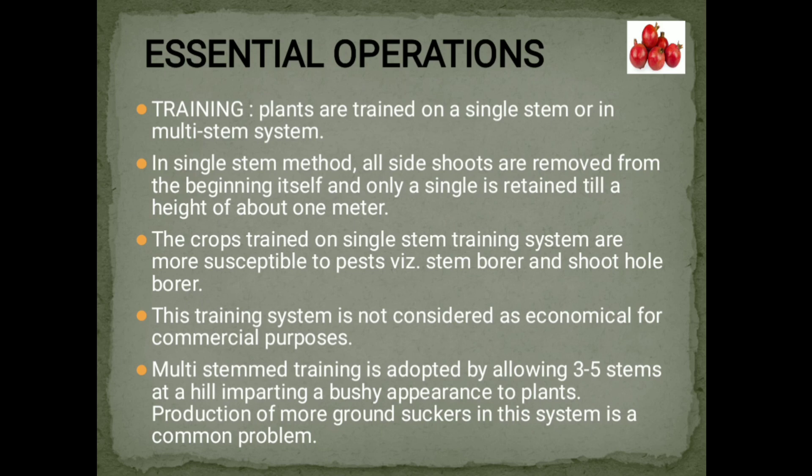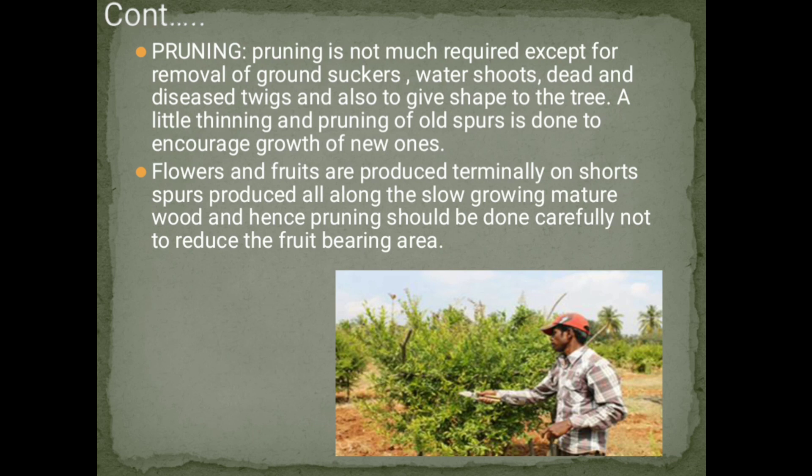Pruning. Pruning is not much required except for removal of ground suckers, water shoots, dead and diseased twigs, and to give shape to the tree. A little thinning and pruning of old spurs is done to encourage growth of new ones. Flowers and fruits are produced terminally on short spurs all along the slow-growing mature wood, and hence pruning should be done carefully so as not to reduce the fruit-bearing area.